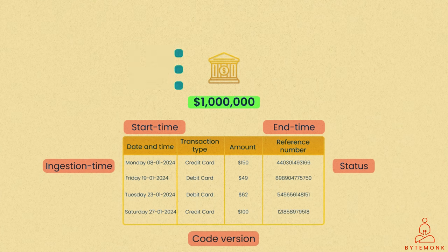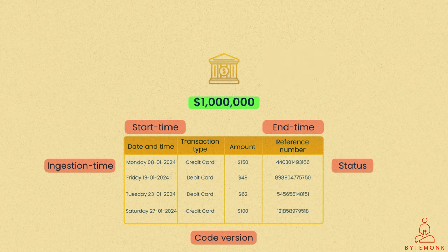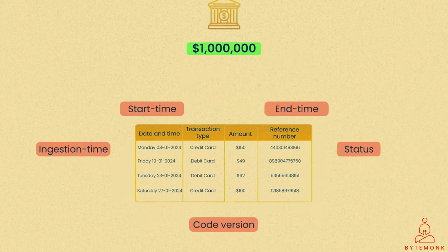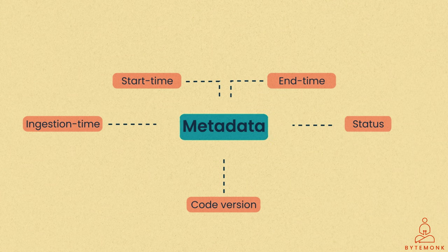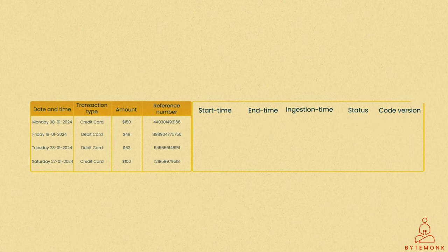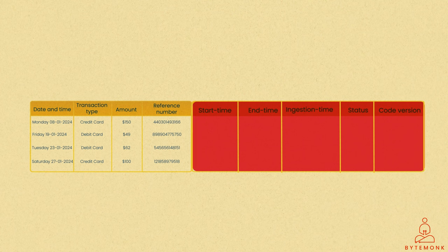Furthermore, associating a code version with the batch processing enables developers to trace and troubleshoot issues linked to specific code versions. These metadata elements can be incorporated into batches in various ways. One approach is to include a metadata column within the batch itself. While this simplifies information retrieval, it adds overhead to the storage.